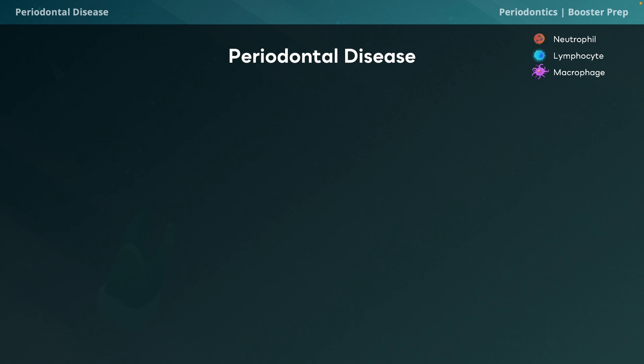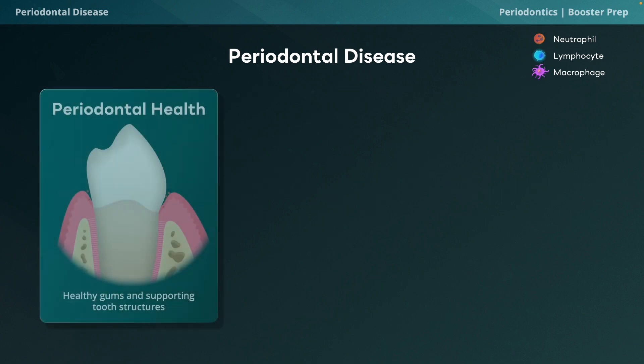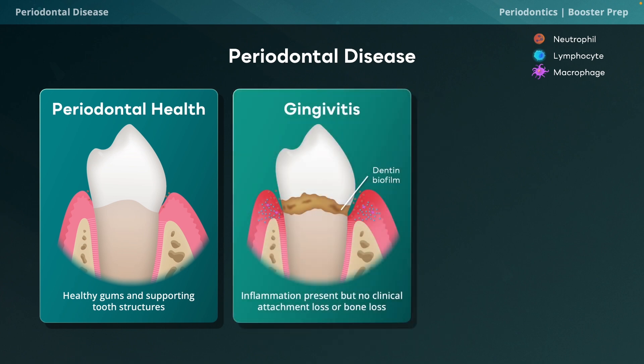Now let's go over the three states of the periodontium. First, periodontal health — the gingiva and supporting structures are healthy, with no inflammation, no clinical attachment loss, no bone loss, and probing depths of 1 to 3 mm. Second, gingivitis — there is inflammation but no clinical attachment loss or bone loss. Gingivitis starts when accumulation of bacteria on the tooth surface forms subgingival plaque, which presents a microbial challenge to the host.